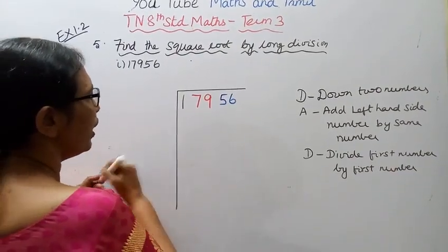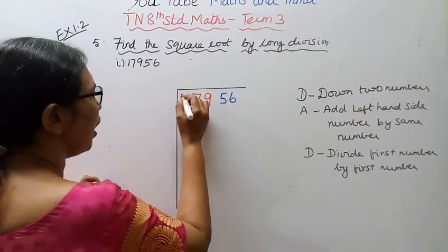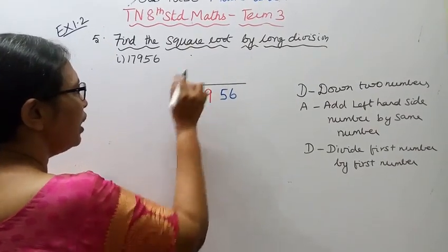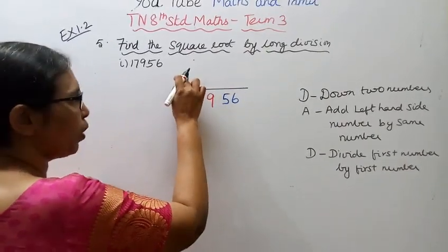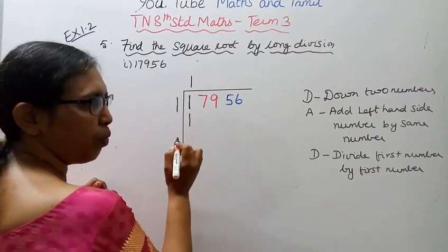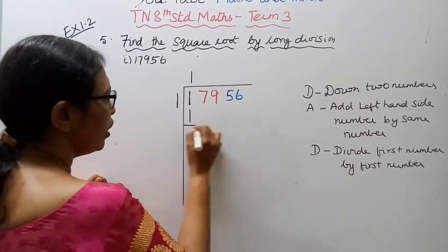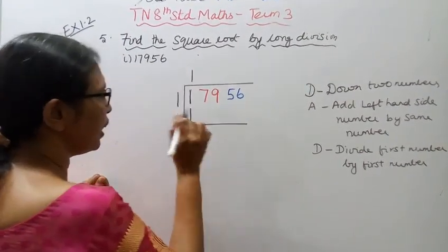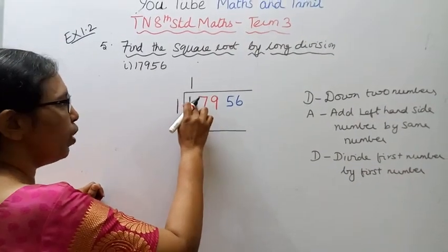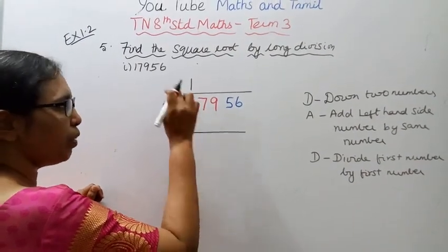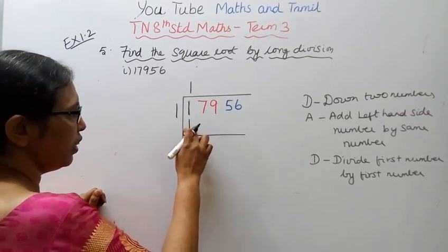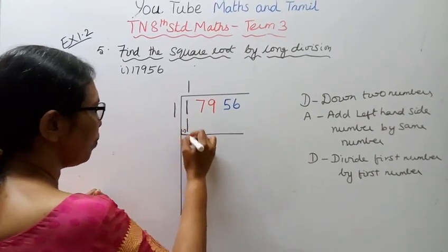Looking at the first group: 1. What number times itself equals 1? One times one equals 1. So we write 1. Subtract: 1 minus 1 equals zero. Remainder is zero.